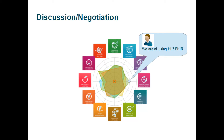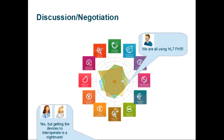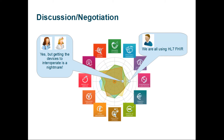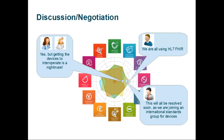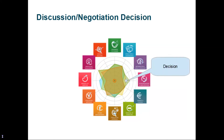It was the IT specialist who states: 'We are all using HL7 FHIR.' Two of the users considered that the ratings should be two levels lower — it is the doctor and the nurse who say: 'Yes, but getting the devices to interoperate is a nightmare.' The administrator considers that the rating should be somewhere in between, explaining: 'This will be resolved soon as we are joining an international standards group for devices.' The team may decide that the rating shouldn't be as optimistic as proposed by the IT specialist, nor as pessimistic as proposed by the doctor and nurse, and they may decide on the intermediate rating provided by the administrator.